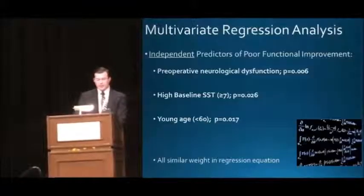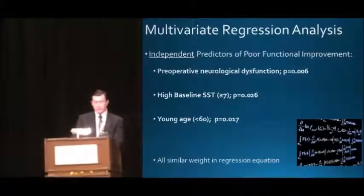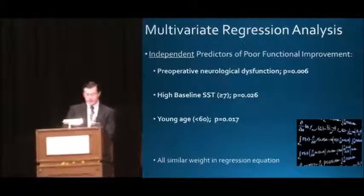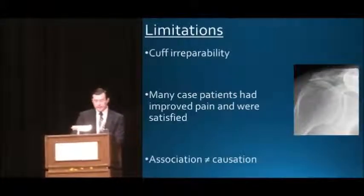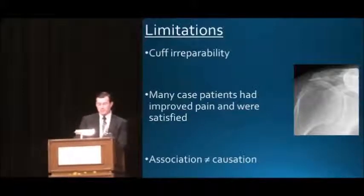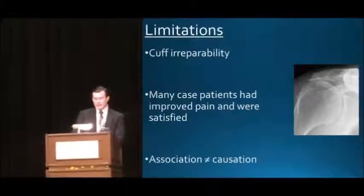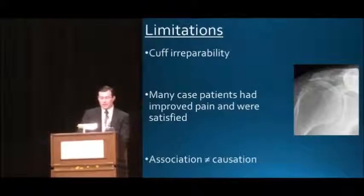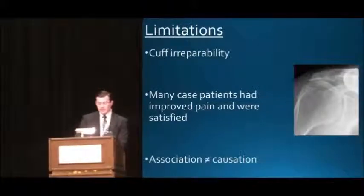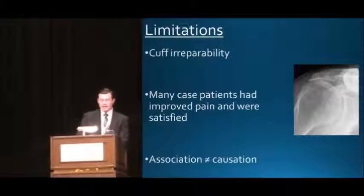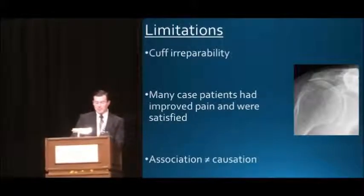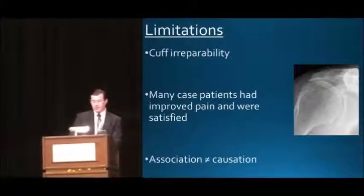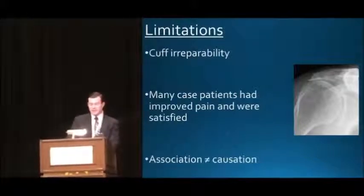A multivariate regression analysis showed that these risk factors were independent predictors of poor functional improvement. It should be noted that these rotator cuff tears were considered to be irreparable based on preoperative characteristics and repair was not attempted. Whether operative repairability can be predicted remains a controversial topic. We caution against using these risk factors as a contraindication for reverse or assuming that they are causative. Many of the case patients had good overall pain relief and satisfaction with the operation.